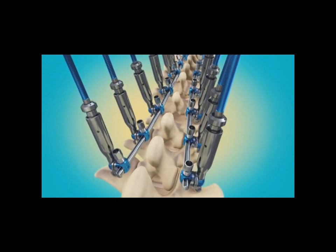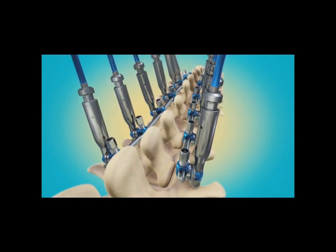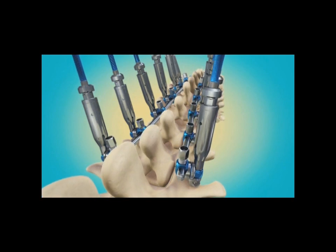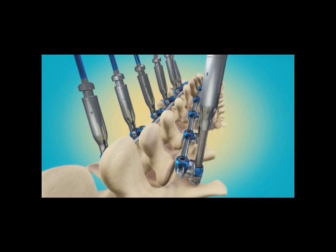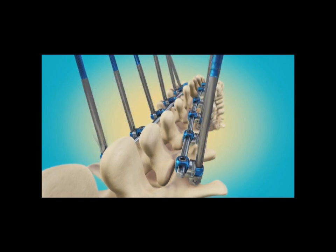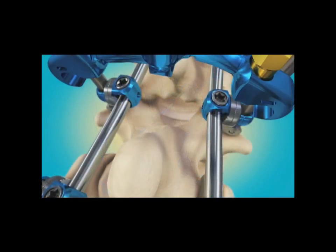Once the rods are fully seated down on the screws, the set screws are tightened, locking the screw connectors onto the rod. The rod crimps can then be removed and the long posts that were used for the reduction can be removed as well.